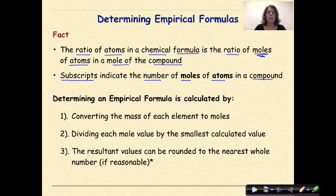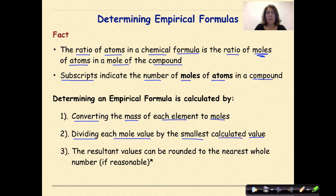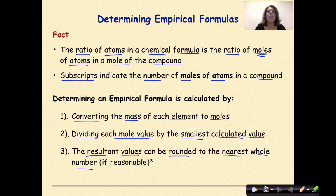Determining an empirical formula is calculated by converting the mass of each element to moles — that's always step one. Then dividing each mole value by the smallest calculated value. Finally, the resultant values can be rounded to the nearest whole number, if reasonable. Most of the time you're going to see very reasonable numbers that can just be assumed to be the subscripts in your compound, but sometimes we can't assume that, and we'll look at one challenge problem in this video today.